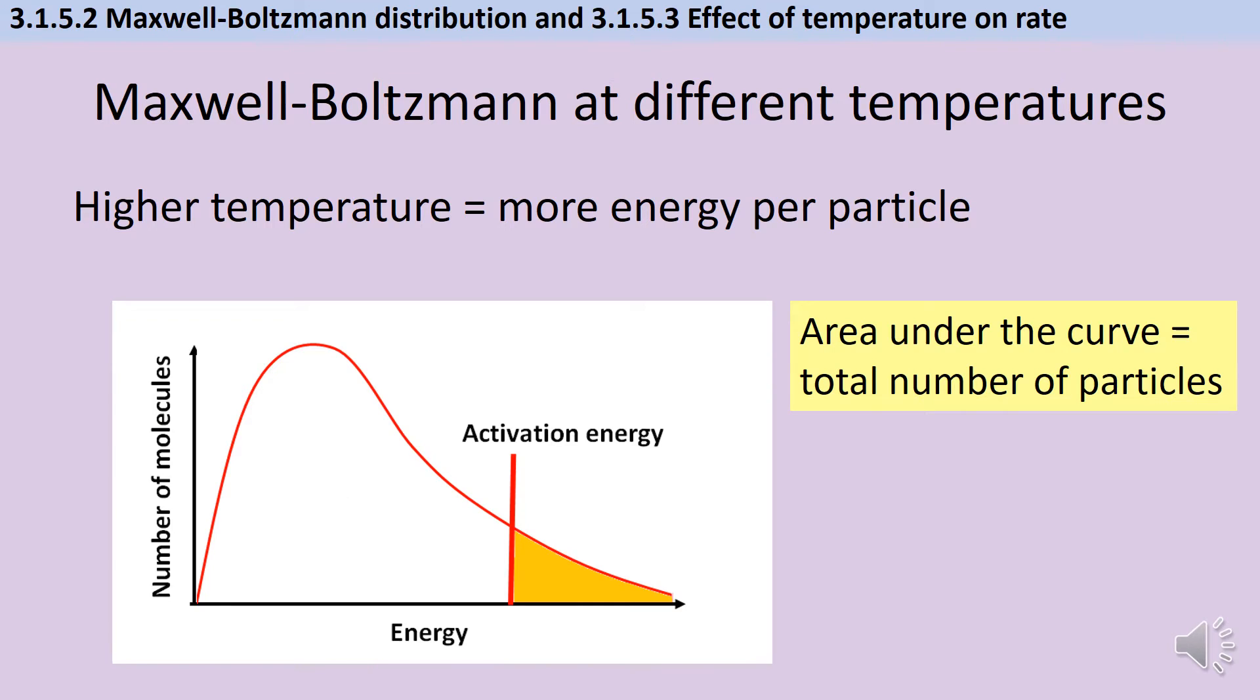One of the most common things that you're likely to be asked to do with a Maxwell-Boltzmann distribution is to redraw it representing the same reaction at either a higher or a lower temperature. In order to do this you need to bear two key things in mind.